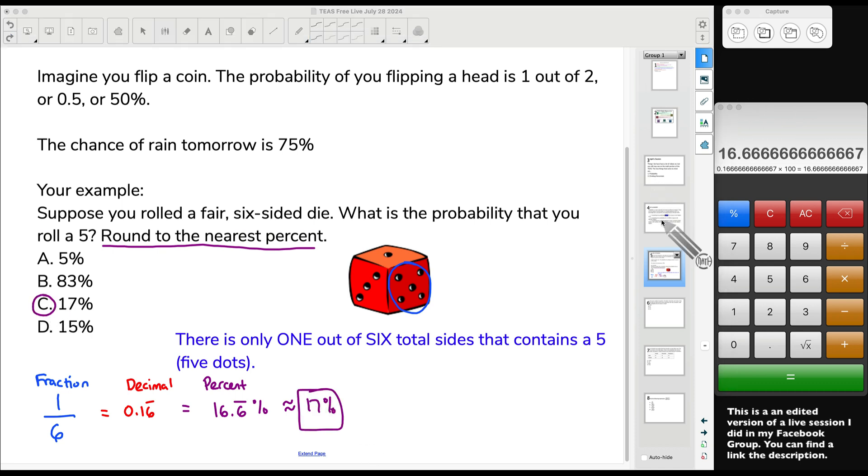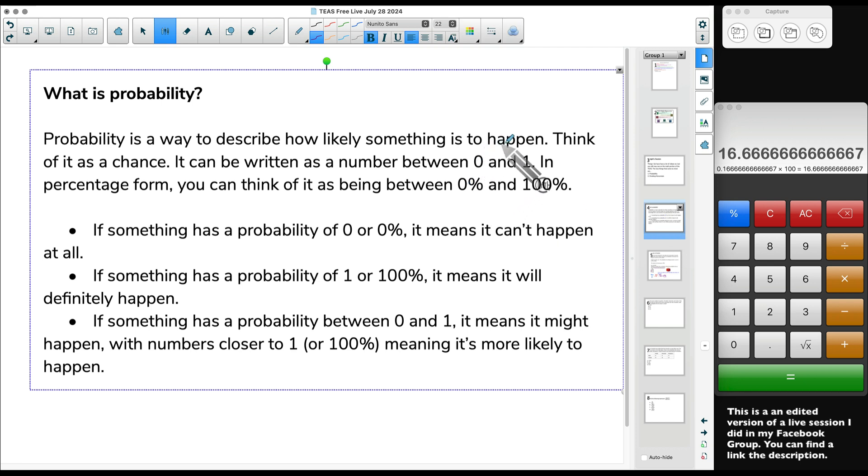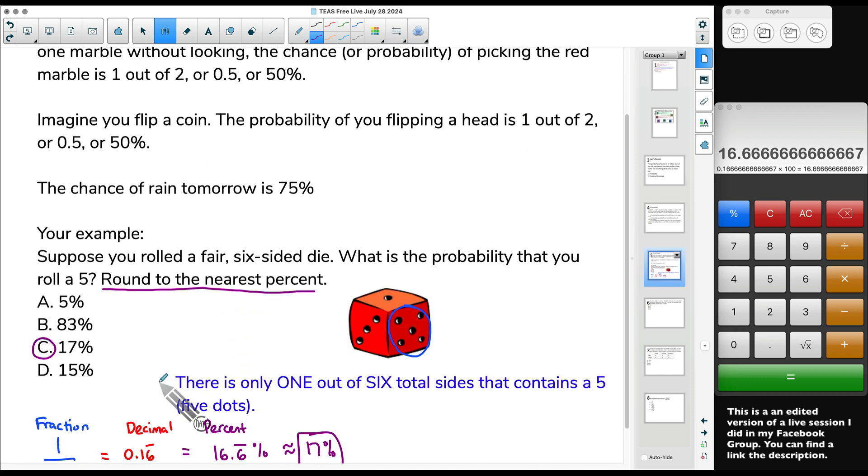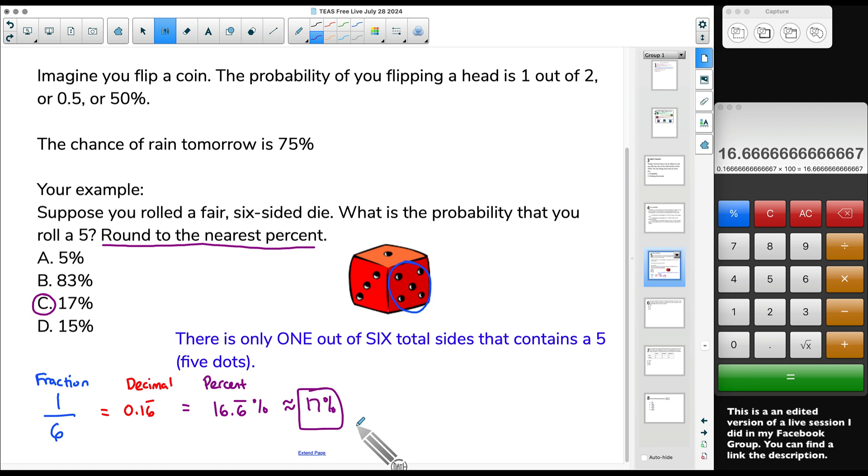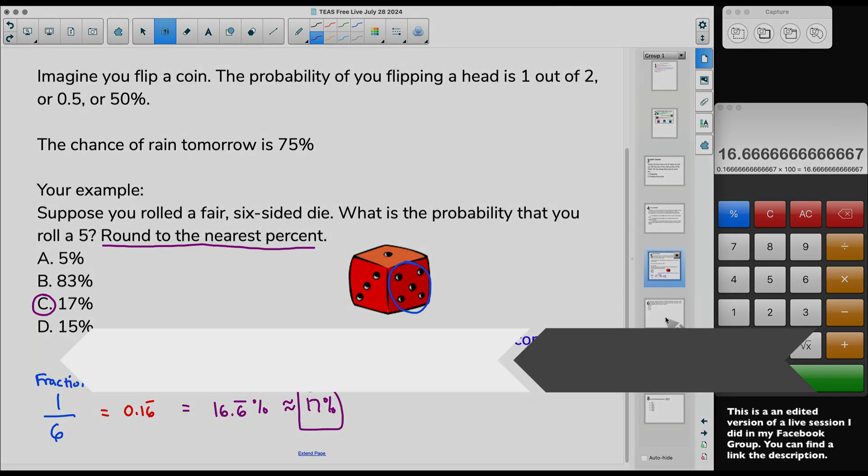Remember, probability between 0 and 1, aka between 0% and 100%. In this case here, our answer was definitely in between 0% and 100%. It was 17%. You got just as good a chance of rolling a 1 on a die as you do rolling a 2, as you do of rolling a 3, or a 4, or a 5, or a 6. That's the whole point of having a fair six-sided die.